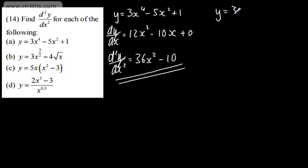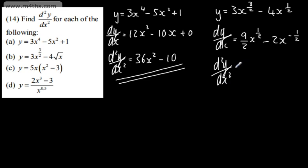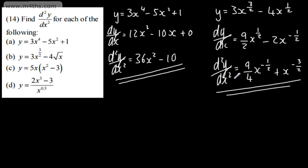Let's do example B. y = 3x^(3/2) - 4x^(1/2). We need to write root x as x to the power of one half, as seen in other videos. So dy/dx, multiplying down, gives us (9/2)x^(1/2) - 2x^(-1/2). The second derivative, d²y/dx², gives us (9/4)x^(-1/2) + x^(-3/2). We're just taking this a step further to find the second derivative.